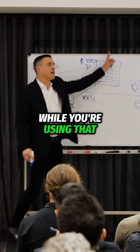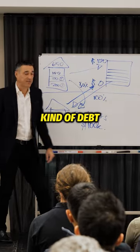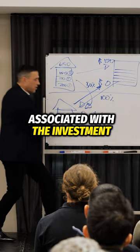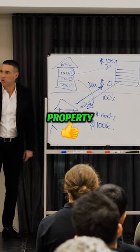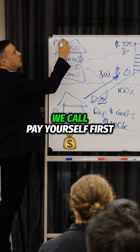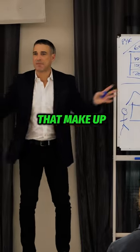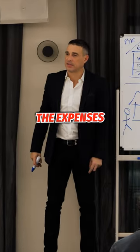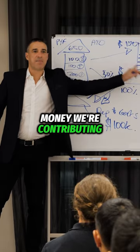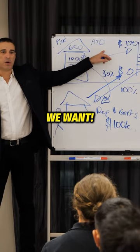At the same time, while you're using that offset account, every time you accumulate debt here it's a very particular kind of debt — it's investment debt. Why? Because it's all expenses associated with the investment property. Those other two parties — you, which we call 'pay yourself first,' and the ATO — are normally the other two parties that make up the other 50% of the expenses. The ATO only requires us to put the rent in here. The money we're contributing and the money the ATO gives us back, we can put wherever we want.